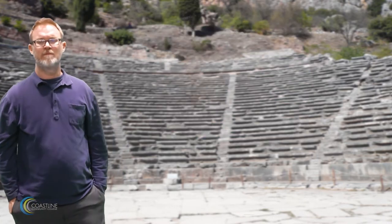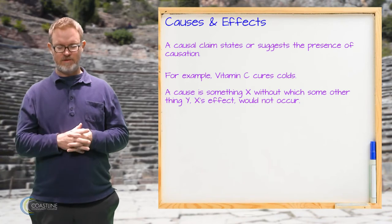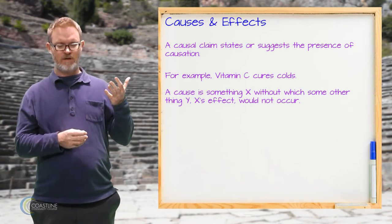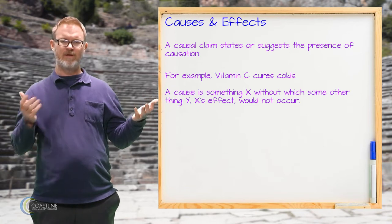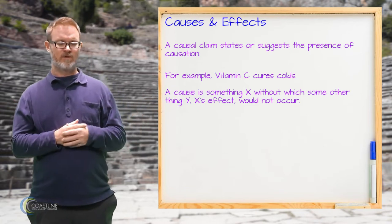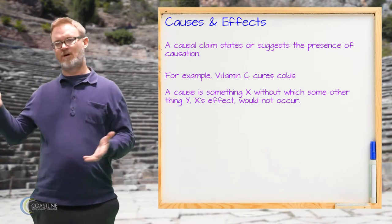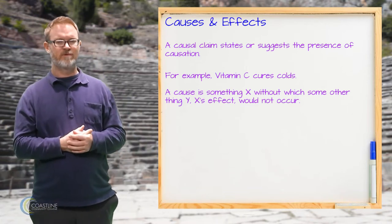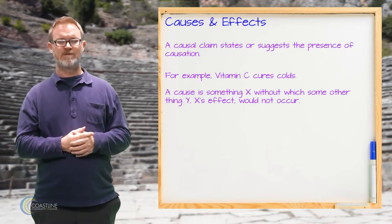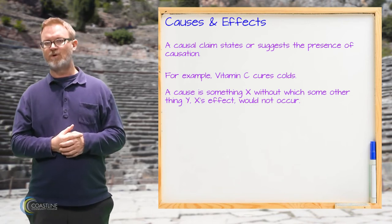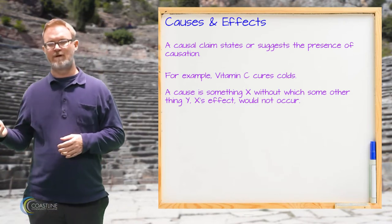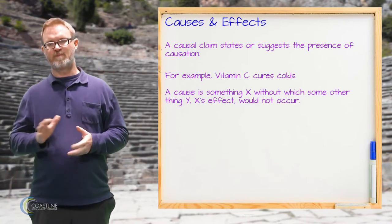A causal claim is essentially a relationship stated between one thing and another, such that one is the cause of the other. We call one the cause and the other the effect, which is the result of that cause. For example, we might say something like vitamin C can cure a cold. The cause there would be the vitamin C and the effect would be the cold disappearing.